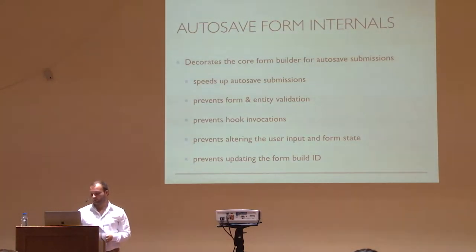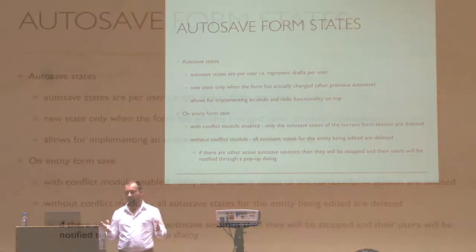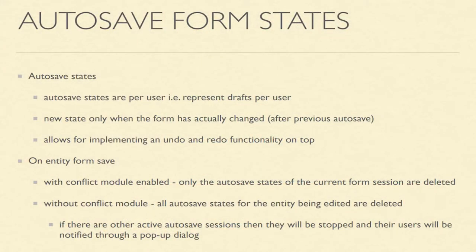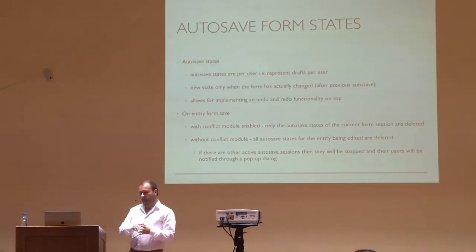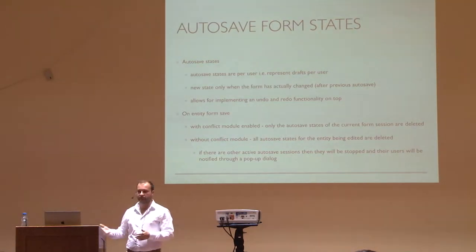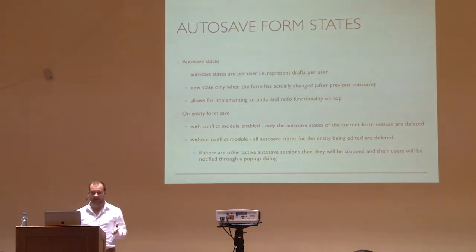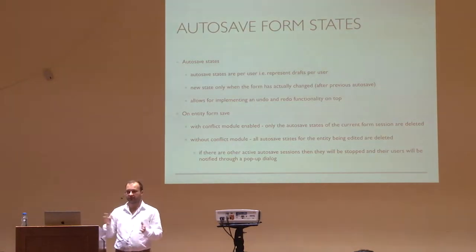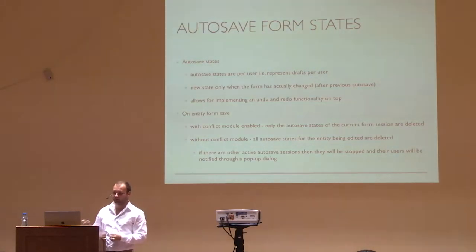In that way, we want to prevent any changes made to the form in any automatic way. The autosave states are per-user — it's like a draft for a user. It's private to that user that's currently working on a specific entity form. New states will be created only when there has been a change. So if I work on a form and I pause, the autosave intervals get triggered, but no new states will be created if I don't continuously work on the form. That makes it possible to implement back and forward functionality so that you can traverse through your changes in a form — it can be built on top of it, though we haven't done that yet.